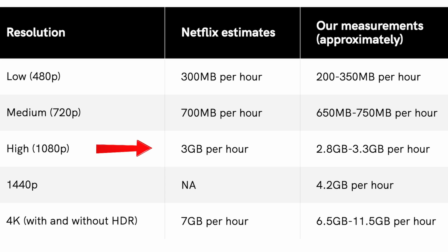At high quality, 1080p, Netflix says 3 gigs per hour, and that was pretty close — we saw about 2.8 to 3.3 gigs per hour. Then finally at 4K resolution, Netflix says 7 gigs per hour, but through our testing we found it could go from 6.5 gigs all the way up to 11.5 gigs per hour.